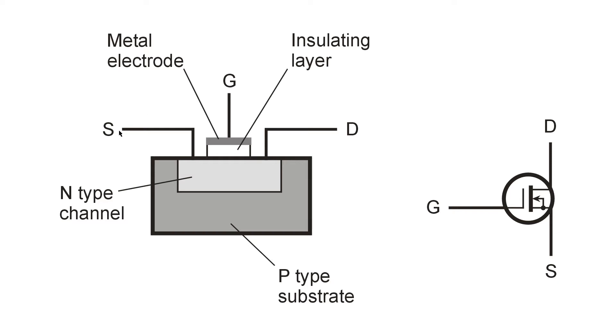Normally, in an N-channel device, the source is negatively charged with respect to the drain, so electrons flow this way. The gate receives a more or less negative charge. If you charge the gate more and more negatively, the electric field produced by that gate will constrict the channel more and more.